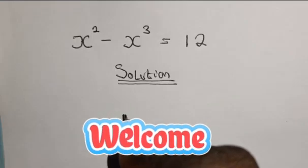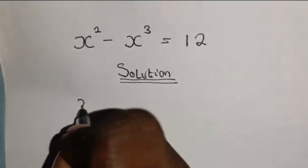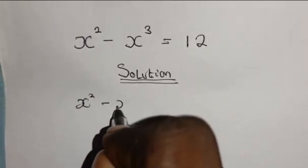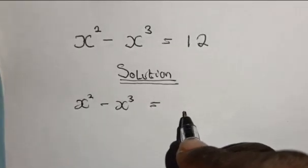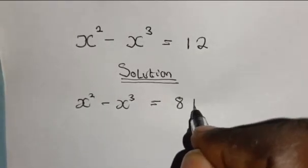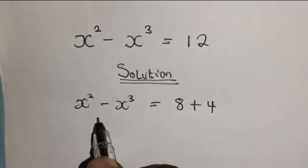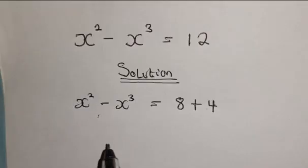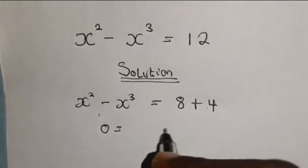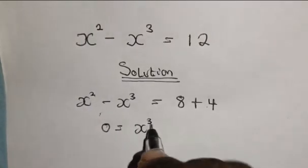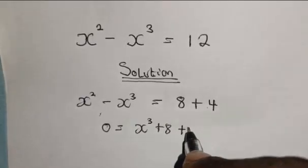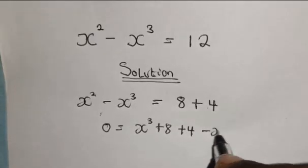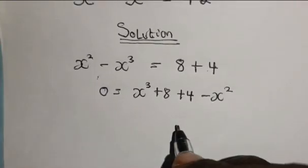Today's video will be solving for all values of x. We have s squared minus s is equal to 12. We can rewrite 12 as 8 plus 4. Now let's bring all this to the right hand side, so we have 0 equals s raised to the power of 3 plus 8 plus 4 minus s squared.